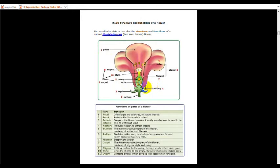So nectary is the place where the nectar is being produced. It is inside the pedicel. Then number 5 is the stamen.